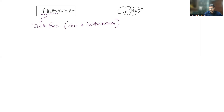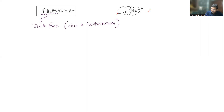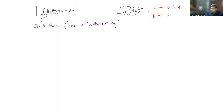But in thalassemia it is actually a quantitative defect — the amount of hemoglobin produced is less. This is because of decreased production of the globin gene. Heme production is normal, but globin gene production is abnormal. This reduced globin production can affect either the alpha globin chain, known as alpha thalassemia, or the beta globin chain, known as beta thalassemia.